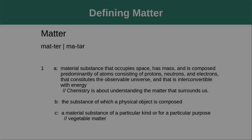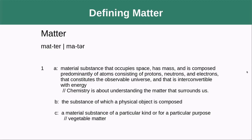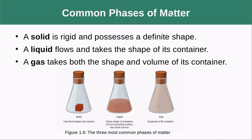We'll also define and give examples of both atoms and molecules. Matter is a substance that occupies space, has mass, and is composed predominantly of atoms. Atoms themselves consist of protons, neutrons, and electrons that constitute the observable universe and that is interconvertible with energy. A more general definition is that matter is the substance of which a physical object is composed, but in chemistry we use the more specific definition. Matter comes in different phases.